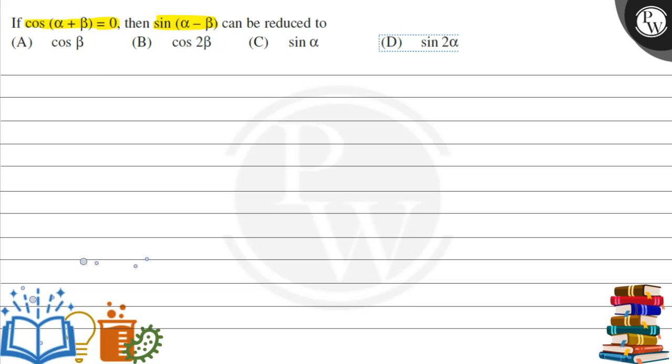Here we have cos(α + β) equal to 0. If cos of something equals 0, how much is α + β? It is 90 degrees. So here we have α equal to 90 degrees minus β.